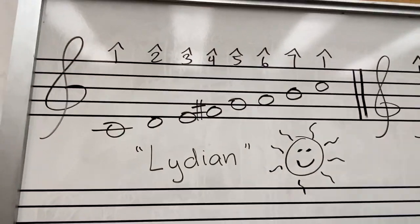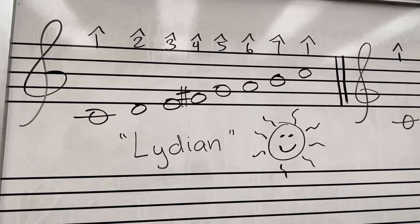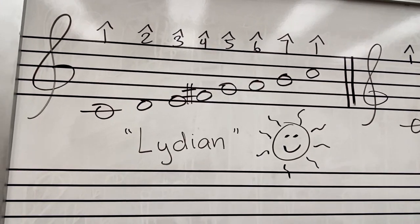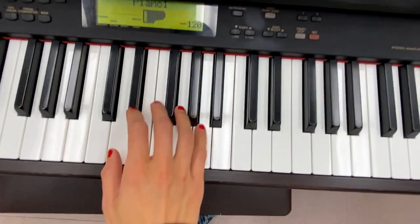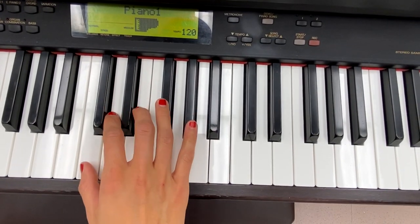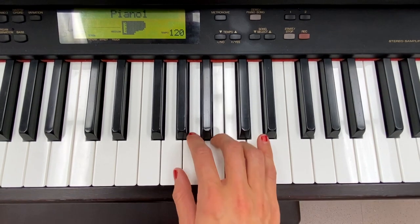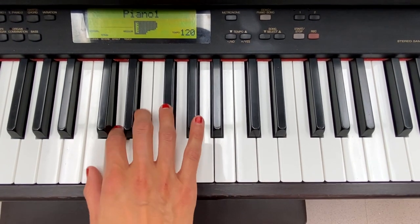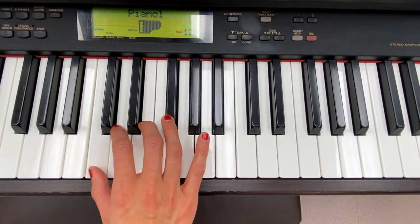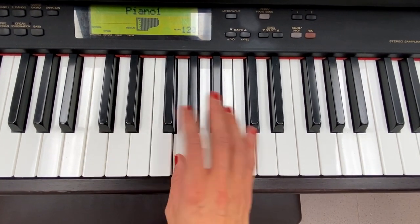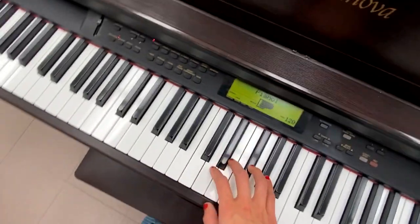Let's start off with Lydian. Lydian is the most sunny out of all the modes, and it has a sharp four. If I take C major and sharp that four, you get kind of a whole tone scale thing going on. It sounds very extroverted, very happy sounding.